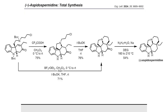A final Wolff-Kishner reduction then yielded aspidospermine. Interestingly, upon measurement of the optical rotation, it was determined that we had obtained the unnatural enantiomer of aspidospermine. Therefore, for the allylic substitution reaction, it was not possible to extrapolate the stereochemical results from the related system of Trost and co-workers to our system.